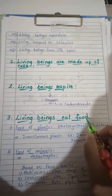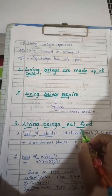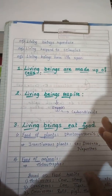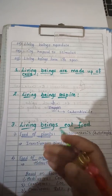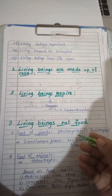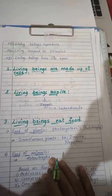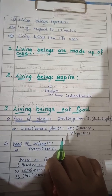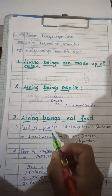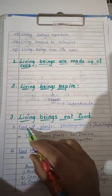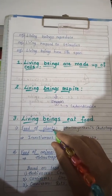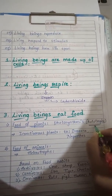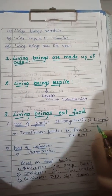The third characteristic is that living beings eat food. All living beings need food to get energy and to do work. We humans and other animals like tiger and lion depend on plants — we eat plant products like fruits, vegetables, or eggs. But plants prepare their own food, so plants are called autotrophs. Autotrophs are organisms that prepare their own food.